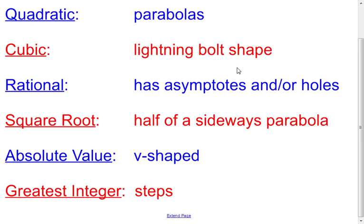The absolute value functions, of course, are V-shaped ones. And then greatest integer functions look like a set of stairs that are coming out. They are also called step functions sometimes. This particular textbook calls them greatest integer functions, but they are also called step functions because of their shape.